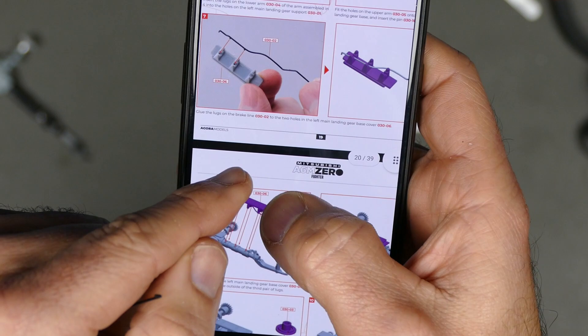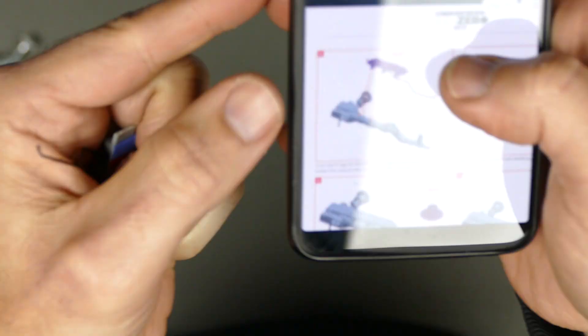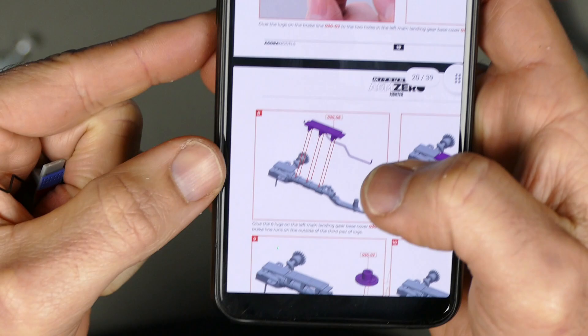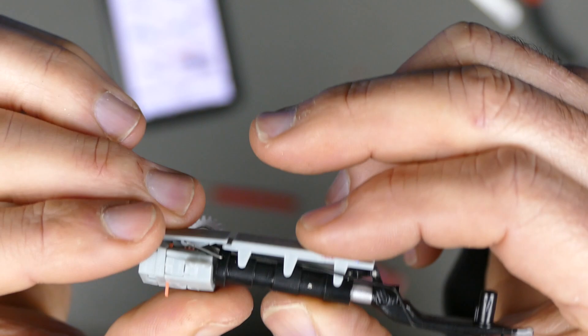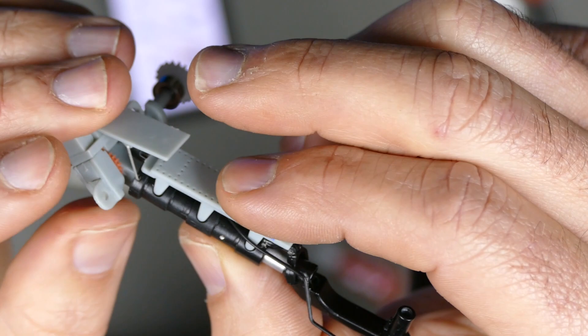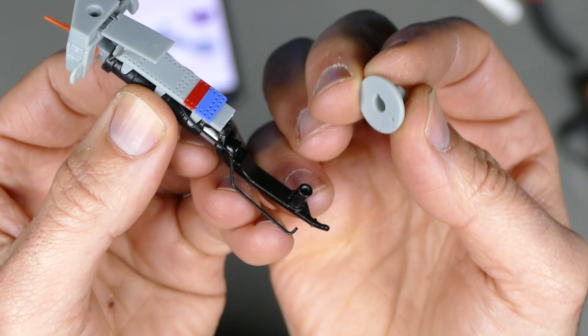First bit of glue on this stage. You've got to glue the lugs on the brake line to the holes on the main landing gear base cover. So basically gluing the lugs from the black one here onto the grey piece here. You can see flipping around it's got some nice colour on there as well. And once that's glued in there we glue it onto the actual main landing gear. And that's it. So there we go. The brake line runs underneath there and just under that cover when it closes. Amazing details.